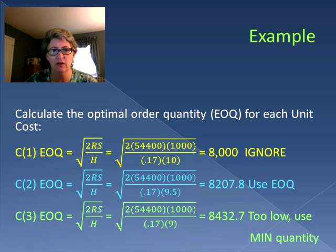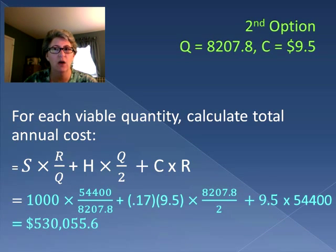Now we calculate the total costs. We have two options. The first uses the EOQ of 8207.8 with a cost of $9.50 per unit. Using the total cost equation that's $530,055.60. Remember that number.